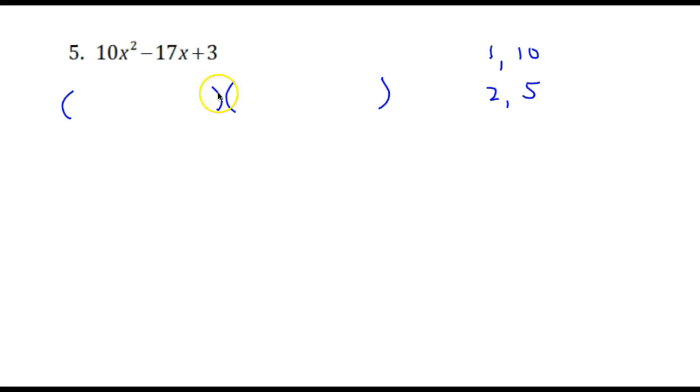I'm thinking maybe 5 times 3 might work. Let's try this: 2x here and 5x here. And then I'm going to multiply, let's see, factors of 3 are 3 and 1.